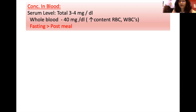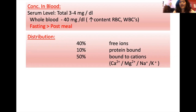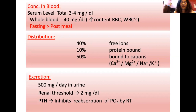In contrast to glucose, fasting phosphorus levels are lower compared to post-meal levels, because post-meal phosphate is used in ATP synthesis. Distribution: 40% remains in free ionic form, 10% is protein-bound, and 50% is bound to cations like calcium, magnesium, sodium, and potassium. Excretion is 500 mg/day in urine. The renal threshold is above 2 mg/dL, and parathyroid hormone enhances reabsorption of phosphate by renal tubules.